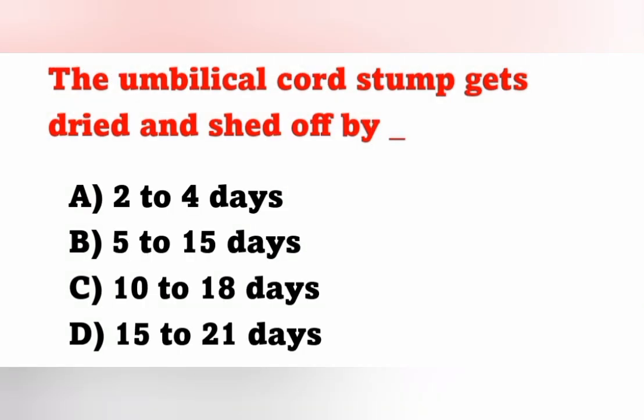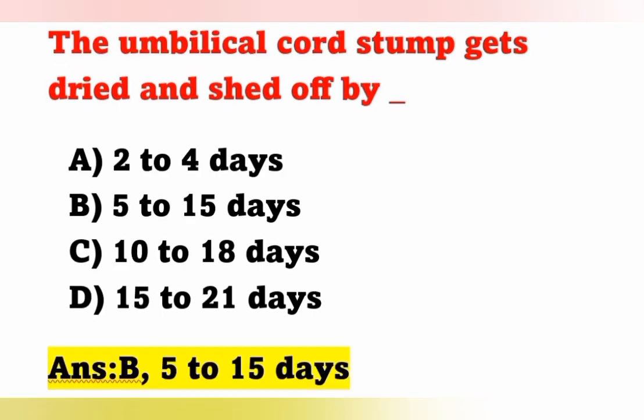Next question: The umbilical cord stump gets dried and shed off by: Option A: 2–4 days; Option B: 5–15 days; Option C: 10–18 days; Option D: 15–21 days. The correct answer is Option B — 5 to 15 days. The umbilical cord stump gets dried and shed off within 5 to 15 days. Until then, we should keep the umbilical cord dry to prevent infection.